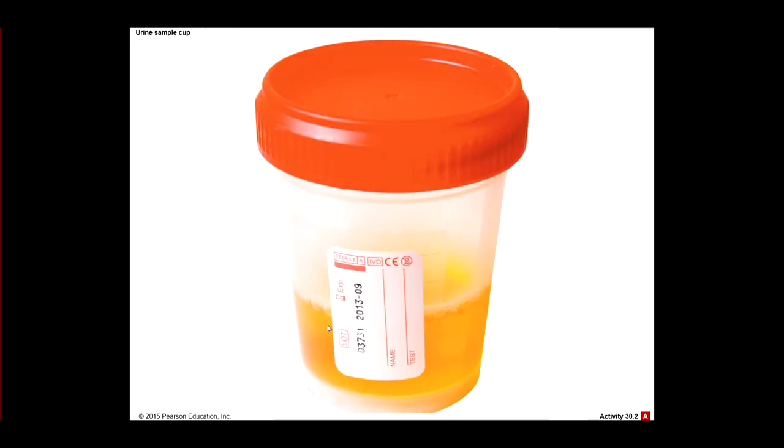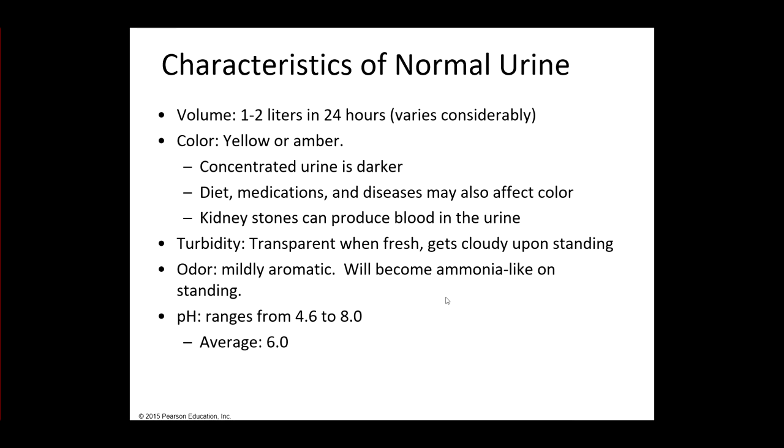So this is an example of a urine sample cup where people can urinate in there and then we can test it. Let's take a look at the characteristics of normal urine. The volume of urine that we make per day is about 1 to 2 liters. Obviously it's going to vary considerably based on your activities, how much you're drinking, that type of thing. But typically urine is yellow or amber in color. If you're dehydrated and your urine is more concentrated, we know that the urine is going to be darker. But if you're drinking a lot of water all day, the urine is going to be more water-like.